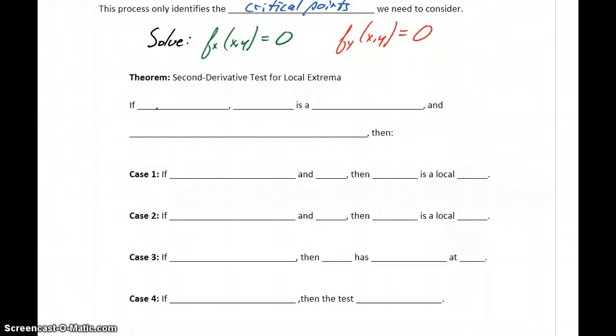To use this, we're going to use the second derivative test for local extrema, which tells us that for some function z equals f(x,y), and if we have some point (a,b) that's a critical point, meaning if we plug a and b in for x and y these two statements should both be true. And then we have these three values that we're going to introduce.